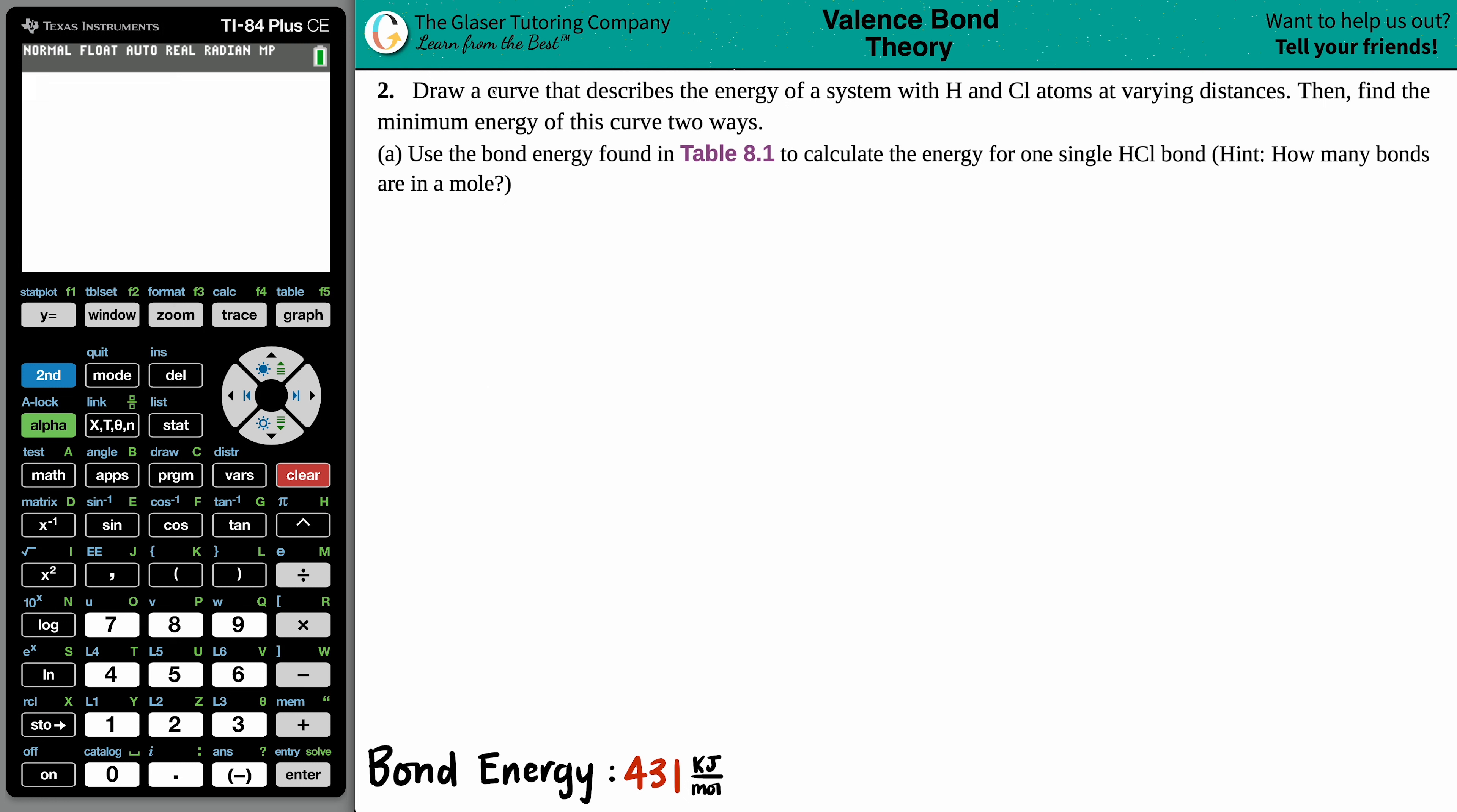Number two, draw a curve that describes the energy of a system with hydrogen and chlorine atoms at varying distances, then find the minimum energy of this curve two ways. And then we're going to do one way in this video.